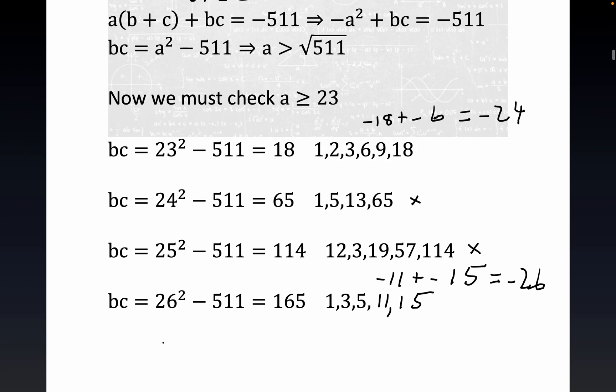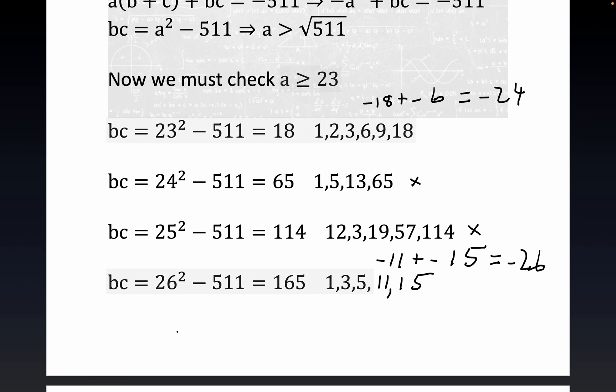So you see what we have learned right here is that a is equal to 26, b is equal to negative 11, and c is equal to negative 15.